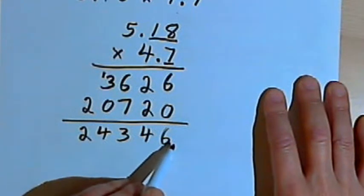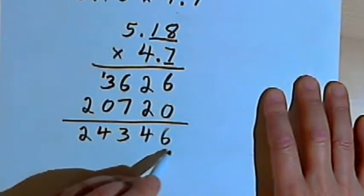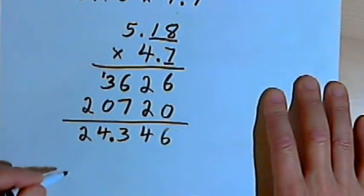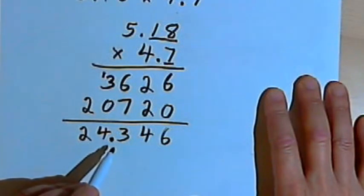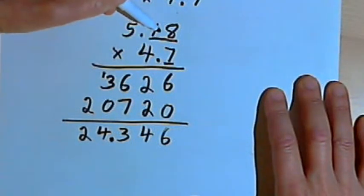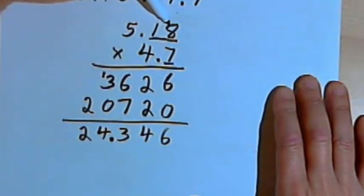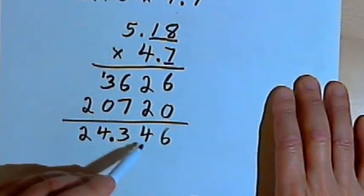What that means is that starting from the right of my answer and moving to the left, I'm going to count 1, 2, 3 decimal places and put my decimal point in. So I'm going to have as many decimal places in the answer as the total number of decimal places I had in the two numbers I was multiplying. And now my answer is 24.346.